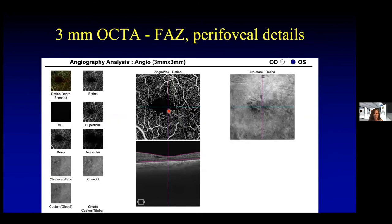What sort of scan protocol do I use when I see my patients? Here's a patient I saw recently in clinic — this is a three millimeter square area scan. We can see that the foveal vascular zone is enlarged with areas of nonperfusion around the fovea. On the en face OCT, we can see some subtle striae and dark spots that correspond to cysts shown on the structural OCT. I like the three millimeter scan to get details about the fovea.